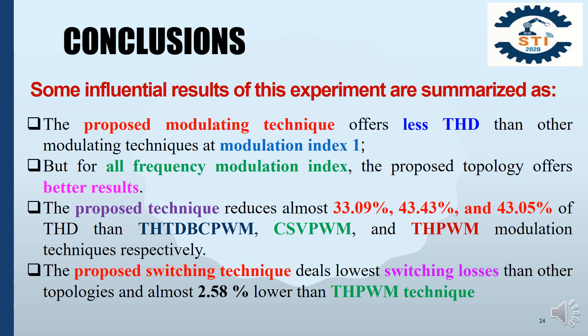In conclusion, some influential results of this work are summarized as follows: the proposed modulation technique offers less THD than other modulation techniques at modulation index 1, and for all frequency modulation index values the proposed topologies offer better results. The proposed switching techniques reduce almost 33.09%, 43.43%, and 43.05% of THD compared to THD-BCPWM, THD-PWM, and THD-PWM modulation techniques respectively. The proposed switching techniques also deliver lower switching losses than other topologies, and almost 2.58% lower than THD-PWM techniques.